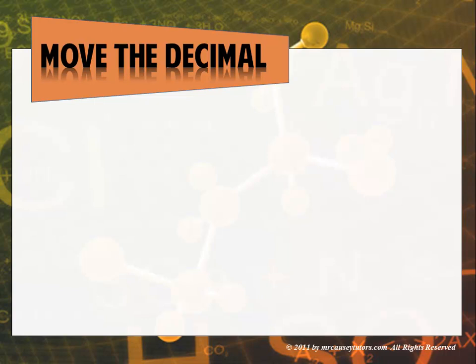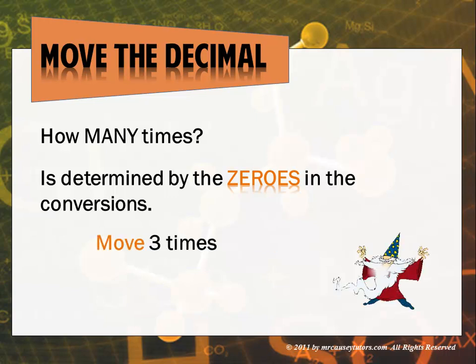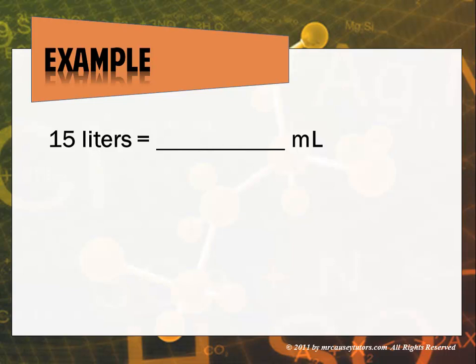And since this is all powers of ten, all we have to do is move the decimal point. Now, how many times? Well, that is determined by the zeros in the conversions. Kilo means 1,000, and it has three zeros, so I'm going to move three times.